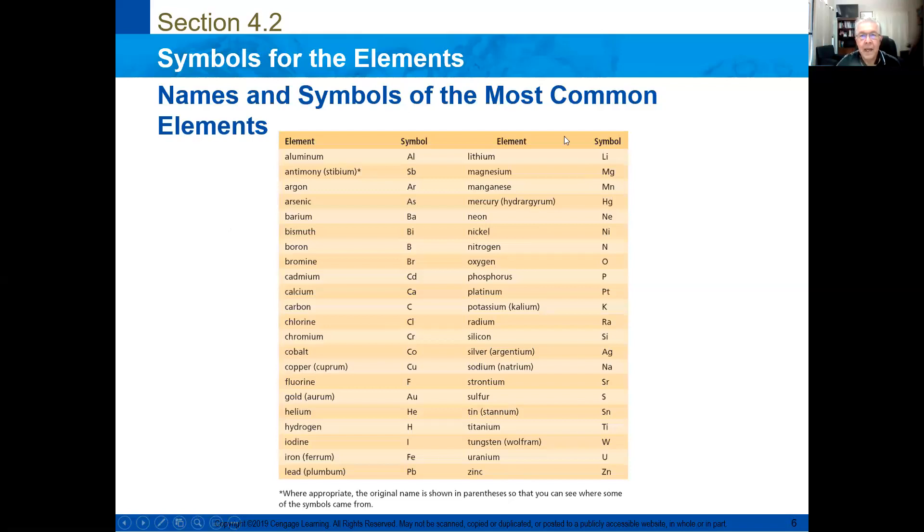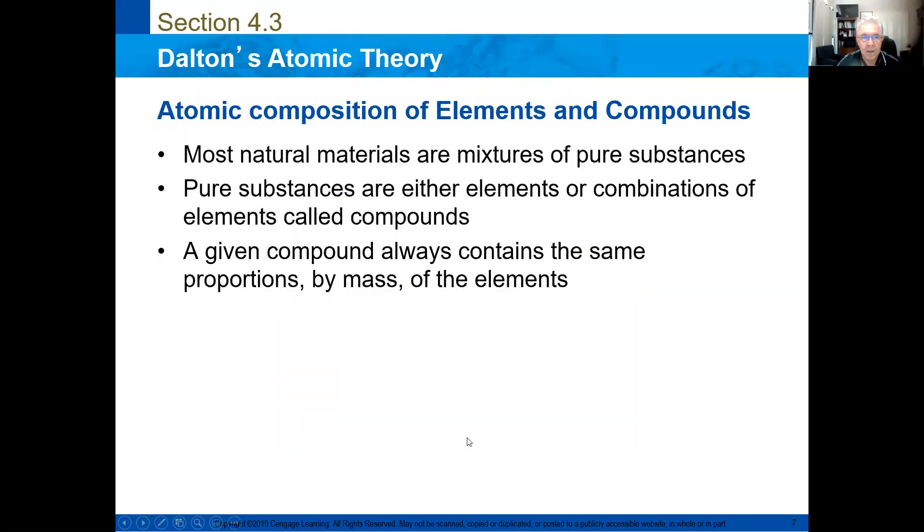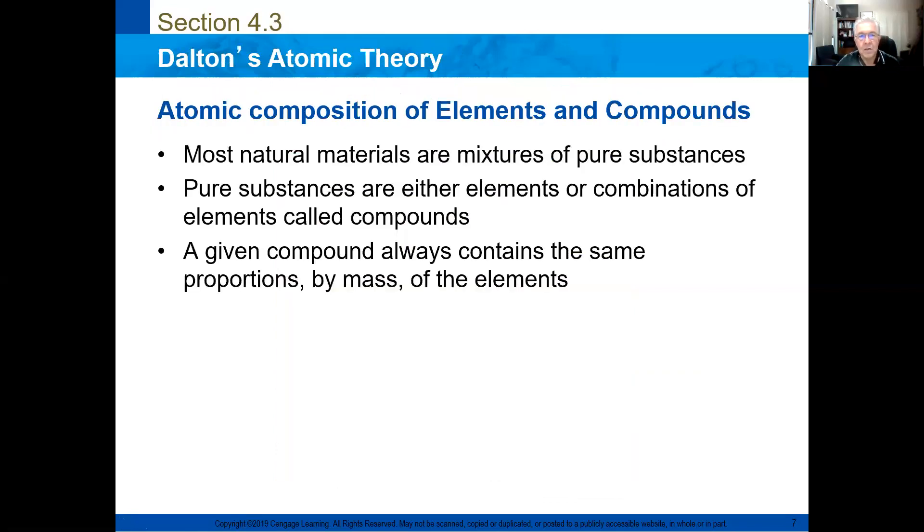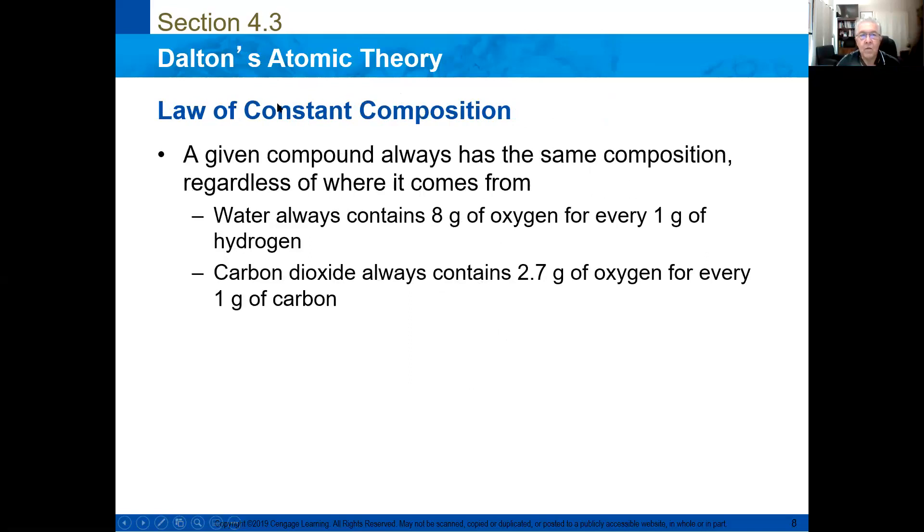Here you have the names and symbols of most common elements. By the way, I sent you a periodic table that you can print and you have all the information you need to work. Most natural materials are mixtures of pure substances. Pure substances are either elements or combination of elements called compounds. A given compound always contains the same proportions by mass of the elements.